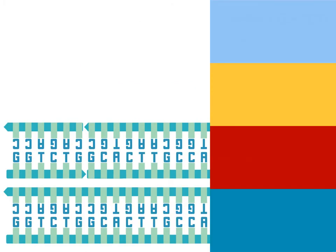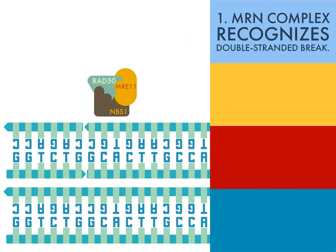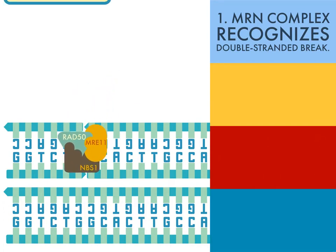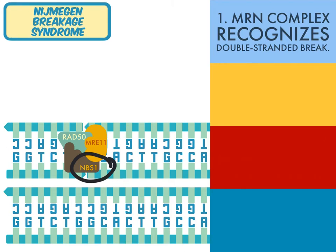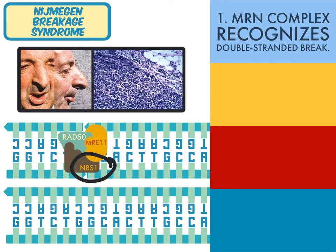In homologous recombination, a number of proteins identify the double-stranded DNA break; together they are termed the MRN complex. An important protein within the MRN complex is NBS1. When NBS1 is mutated due to a heritable defect, Nijmegen breakage syndrome results. Without a functional NBS1 protein, the double-stranded break is not recognized. These patients are extremely sensitive to ionizing radiation and are at particular risk for non-Hodgkin lymphoma, among other cancers. Overall, patients with Nijmegen breakage syndrome are 50 times more likely to develop cancer than people without this defect. These patients also have stunted growth, intellectual disability, a distinctive craniofacial appearance, and immunodeficiency.